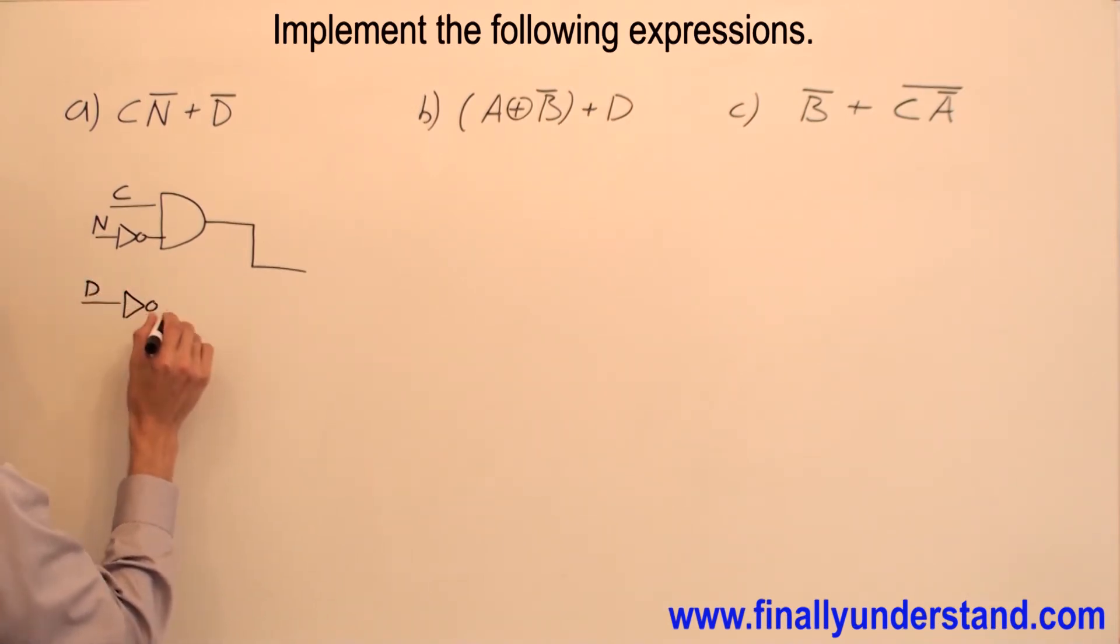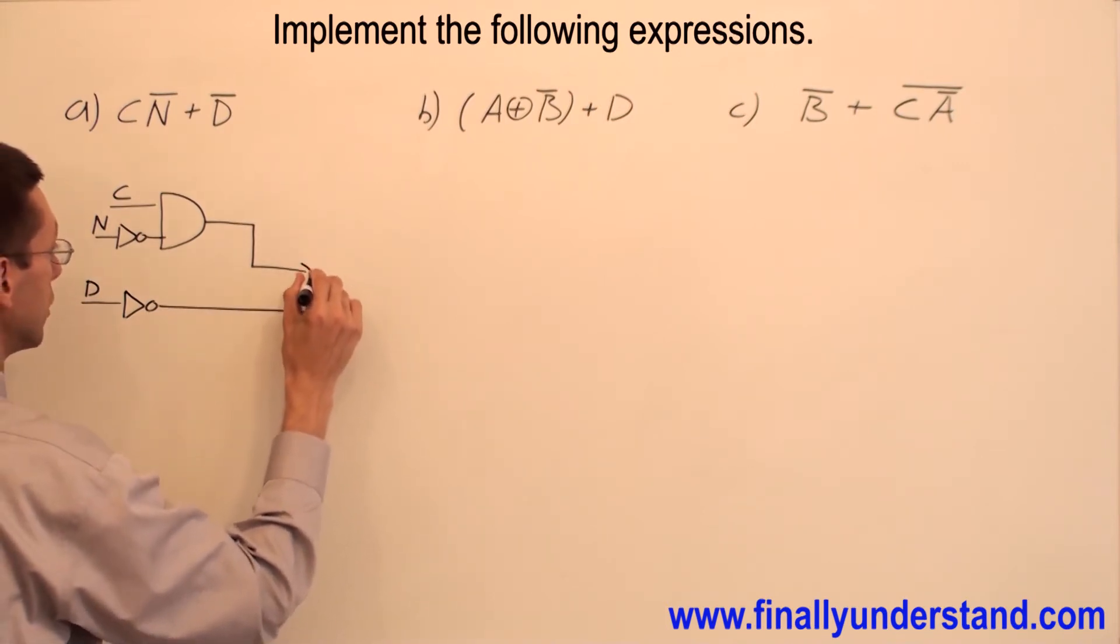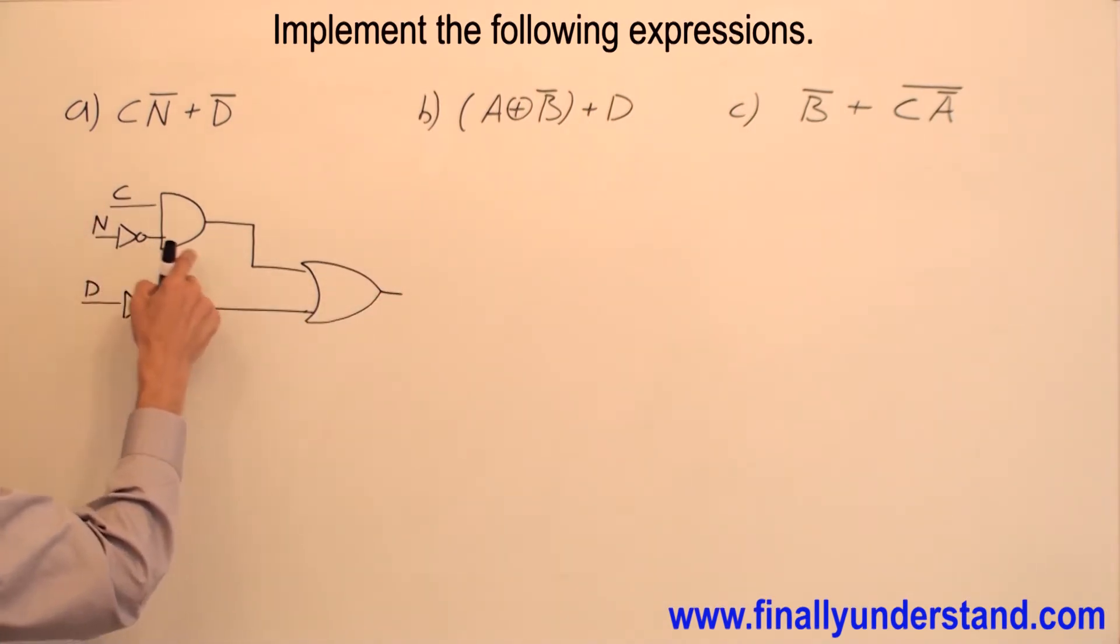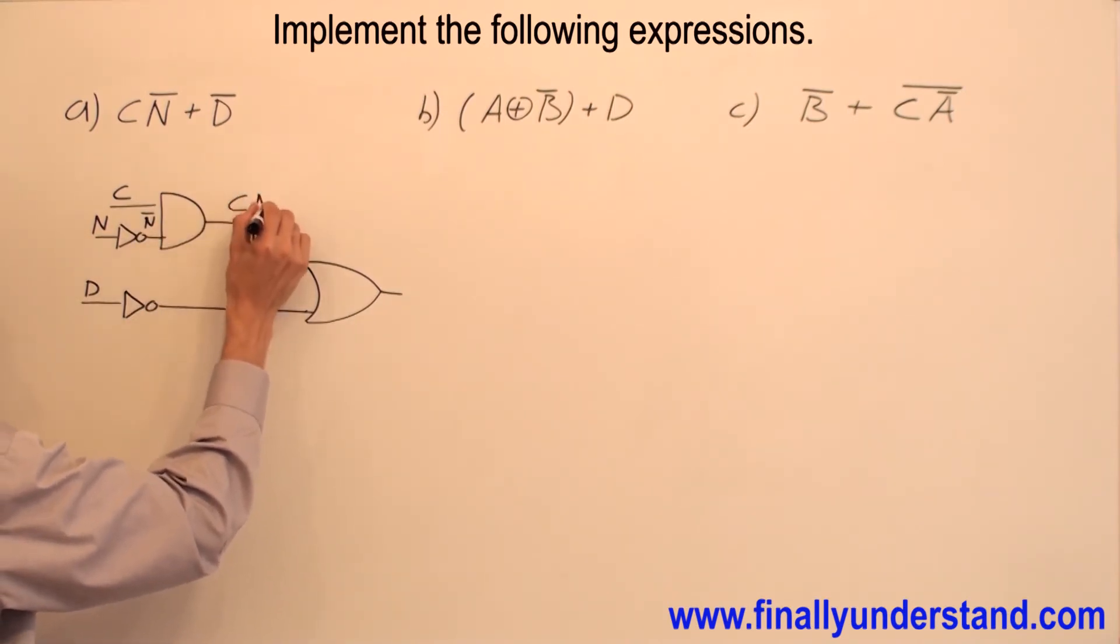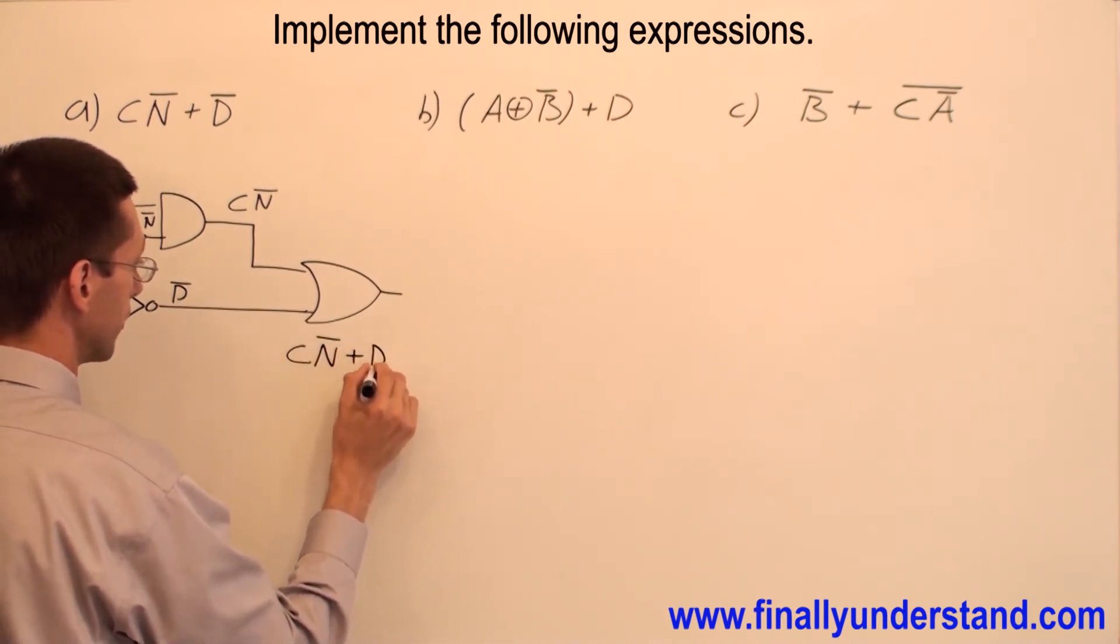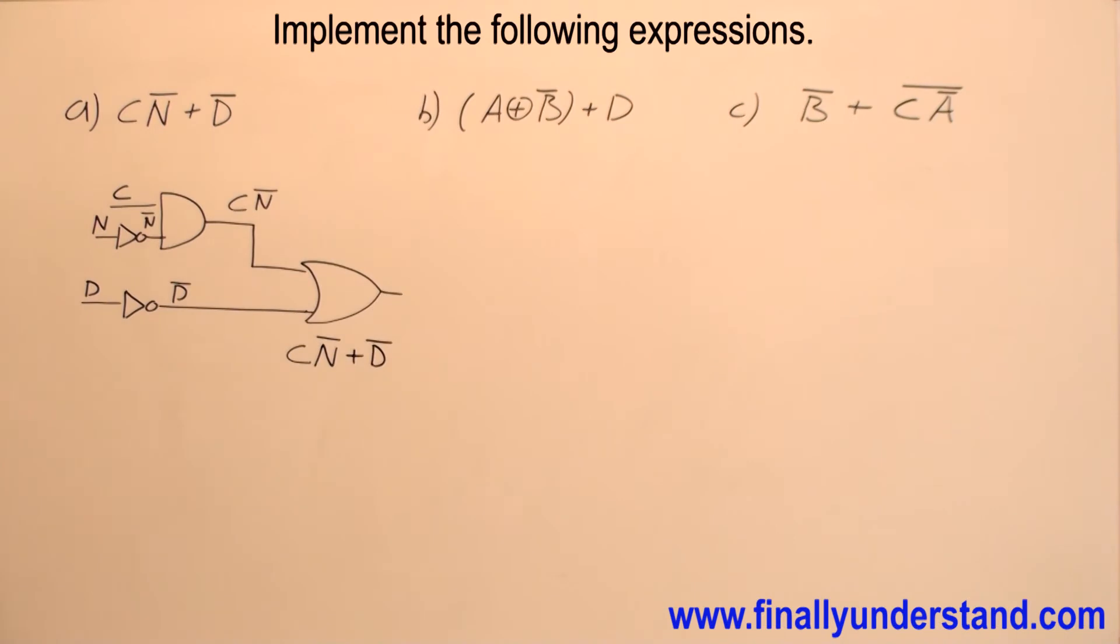So this is my D and has to be ORed with my AND gate. If you want to verify that your answer is correct, you can always find the output function of this circuit. So this is C, this is going to be my N̄. So I have C times N̄. This is D. At the output of the inverter I'm going to have D̄. This is OR and the output function is going to be C·N̄ + D̄. Simple. Let's do the next one.